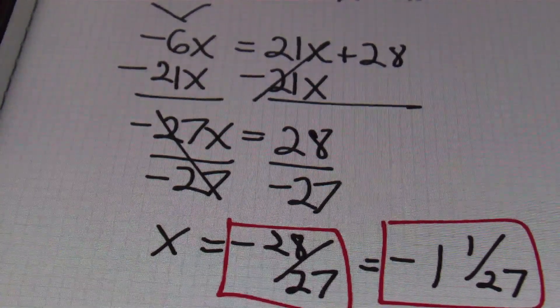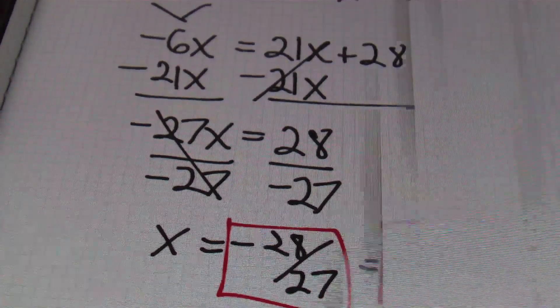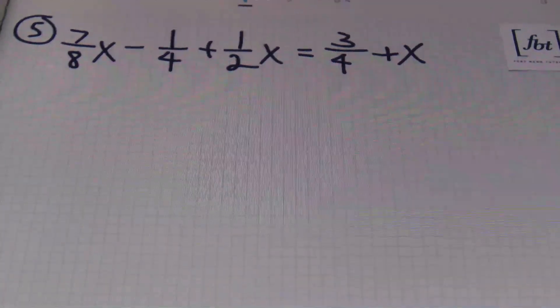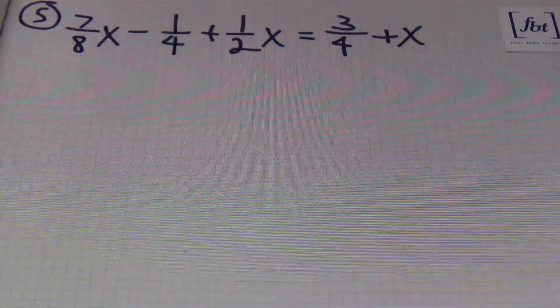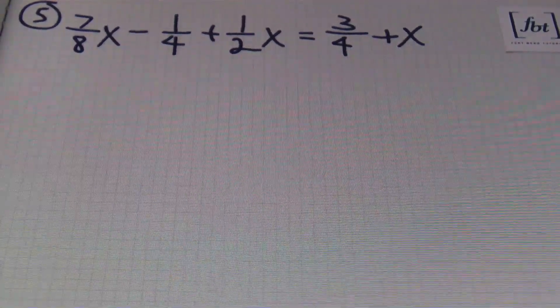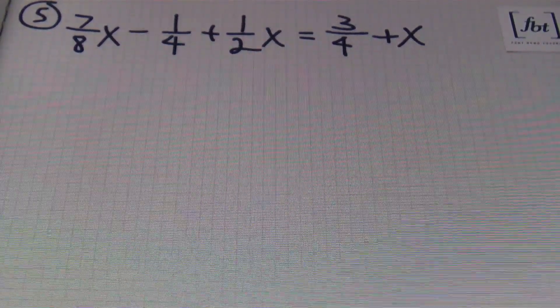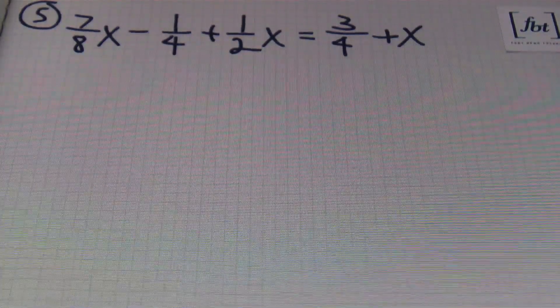Next problem coming up is problem number five. Here we go. Problem number five: seven-eighths x minus one-fourth plus one-half x equals three-fourths plus x. Once again, fractions riddled throughout the problem.